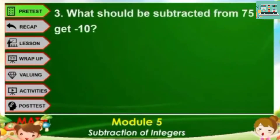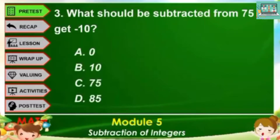Number 3. What should be subtracted from 75 to get negative 10? A, 0. B, 10. C, 75. D, 85.